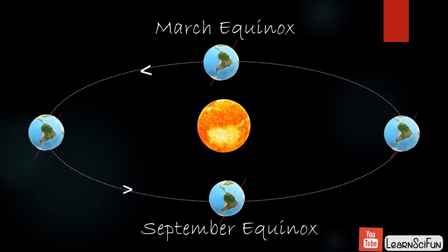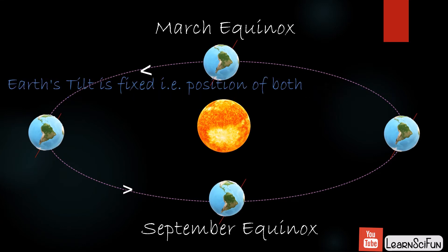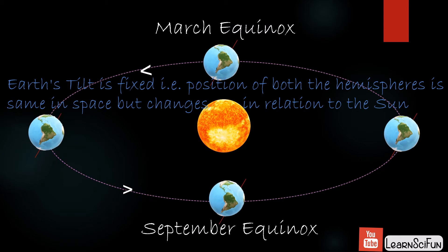The direction of earth's tilt is fixed, which means the position of both hemispheres remains the same in space, but their position changes with respect to the Sun. This is because Earth revolves around the Sun following an elliptical path.